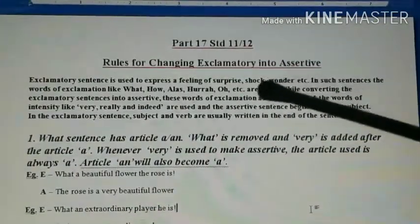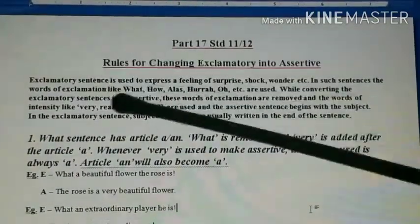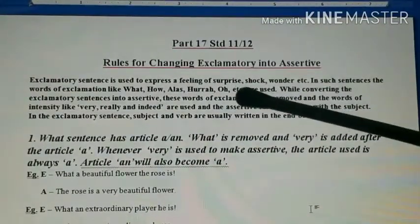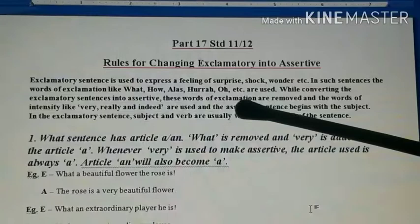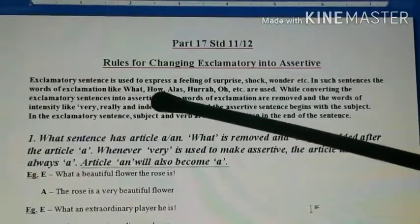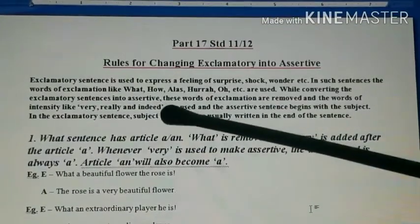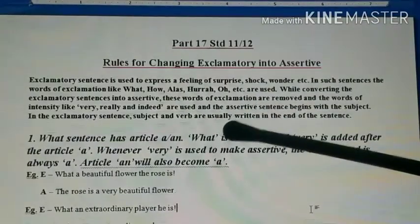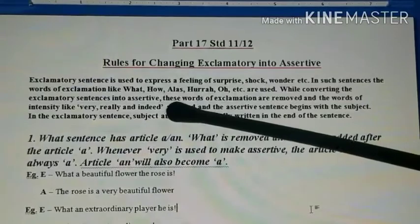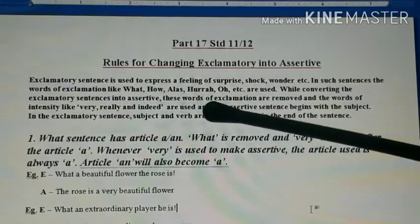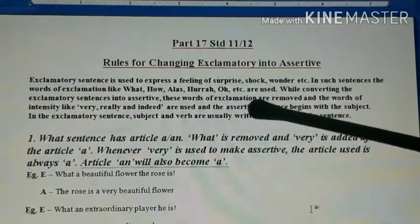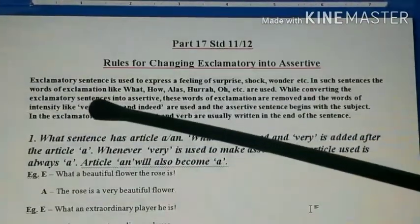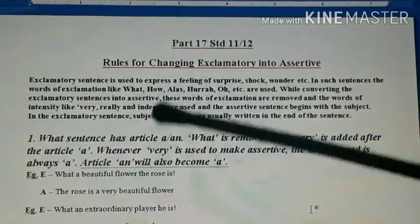Exclamatory sentences are used to express a feeling of surprise, shock, wonder, etc. In such sentences, the words of exclamation like what, how, alas, hooray, oh, etc. are used. While converting exclamatory sentences into assertive, these words of exclamation are removed and the words of intensity like very, really, and indeed are used.